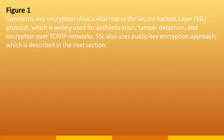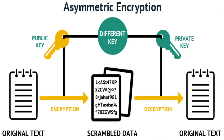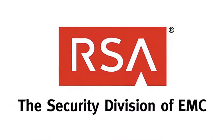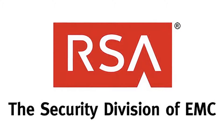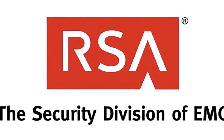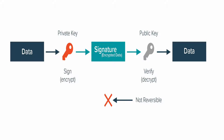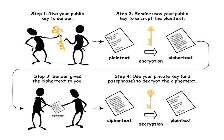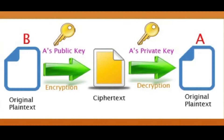SSL also uses a public key encryption approach. Public key or asymmetric key encryption: The most commonly used implementations of public key encryption are built on algorithms patented by RSA Data Security. This section also describes the RSA approach to public key encryption. Public key encryption, also called asymmetric encryption, involves two keys — a public key and a private key. It is associated with an entity that needs to confirm its identity electronically or to sign or encrypt data. Each public key is disclosed and the corresponding private key is kept secret. Data encrypted using the public key can be decrypted only using the corresponding private key.